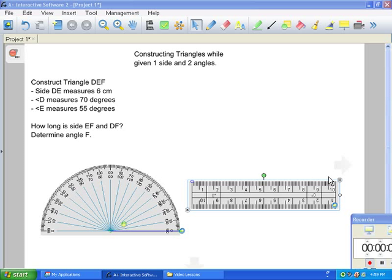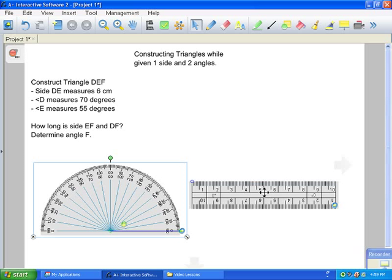Welcome. For this lesson, we're going to be constructing triangles while given one side and two angles. Once again, you need the key tools to making triangles, which is a protractor and a ruler. For this purpose, we're going to be constructing triangle DEF.